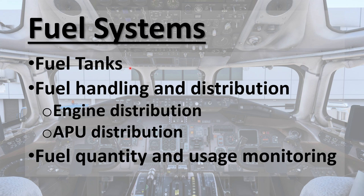I'm going to divide the fuel system on this aircraft into three parts, just like any other aircraft. First is storage — the fuel tanks — so we'll go over the location and capacity. Second is fuel handling and distribution: how fuel is handled and distributed to the engine and to the APU. Third is where you look for fuel quantity and usage inside the cockpit.